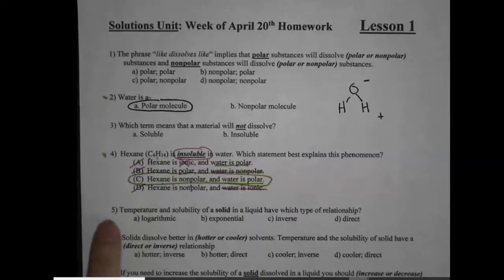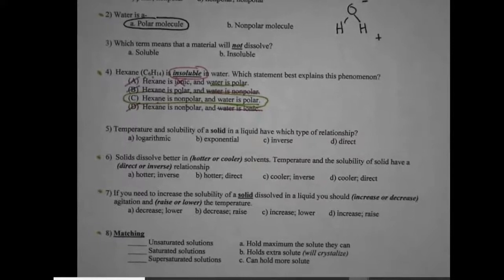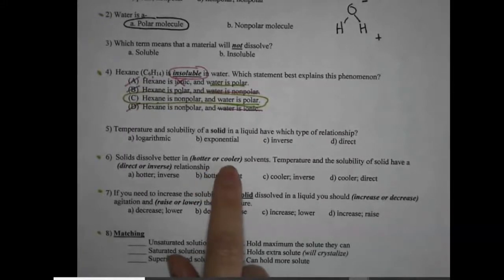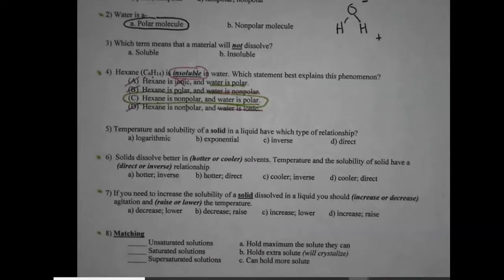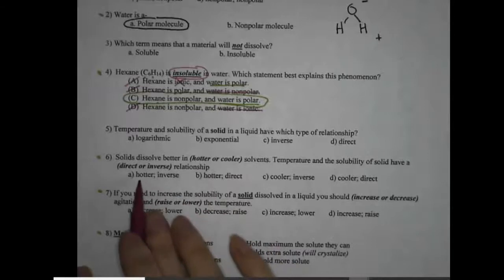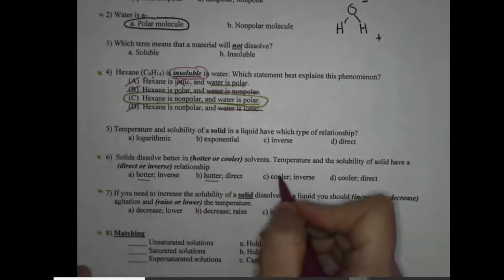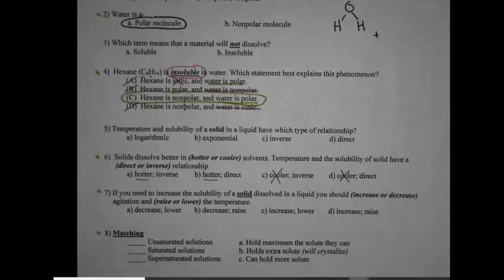Number six will help you answer number five, so I wanted to look at number six with you. Number six says solids dissolve better in hotter or colder solvents. Temperature and the solubility of solid have direct or inverse relationship. We learned that higher temperature dissolves solids better. Hot chocolate will dissolve more cocoa, hot tea will dissolve more sugar, those types of things. So solids dissolve better in hotter. We're going to say yes for A and B. They definitely don't dissolve better in cooler. So if we're taking out the garbage, I got rid of those.